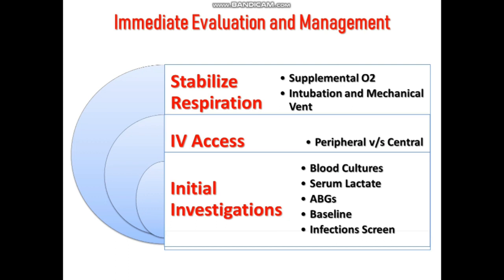Second, we need to measure serum lactate levels. A serum lactate level of more than 4 indicates severe sepsis, and the lactate level correlates with the severity of sepsis. It can also be used to follow the treatment response. ABGs should also be done in patients with septic shock because they have metabolic acidosis.